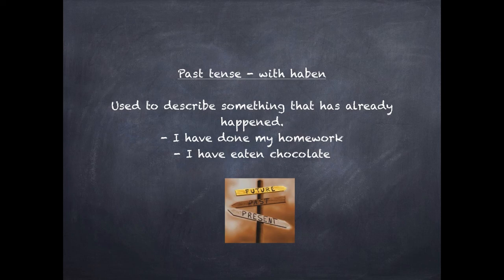Today we're looking at the past tense. Past tense is used to describe something that's already happened. For example, I have done my homework and I have eaten chocolate — something that you have done, or at least something you should have done.